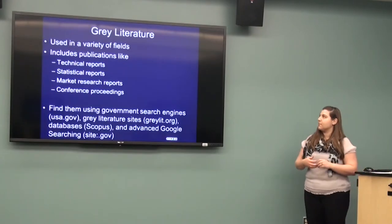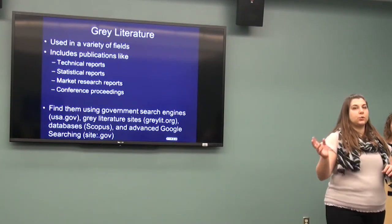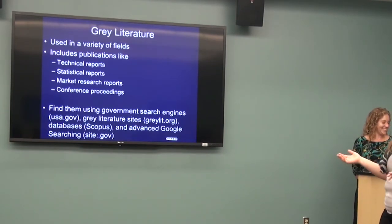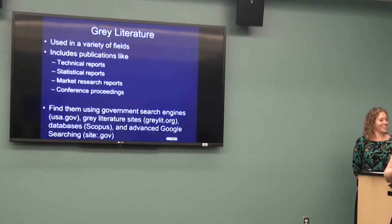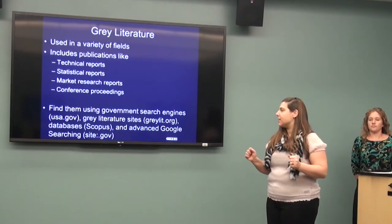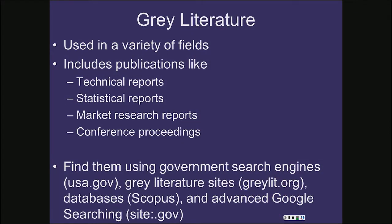Some other places to get useful information are through gray literature, which exists in pretty much every field, significantly in health and science. That can include publications like technical reports, data sets, market research reports, conference proceedings, and poster presentations — a wide variety of things that can be difficult to find. Some places to look: government search engines like USA.gov limit results to government sources only. There's also graylit.org, a medical gray literature site. Some databases like Scopus will tell you if something is a conference report or poster presentation. You can also do an advanced Google search using 'site:.gov'.